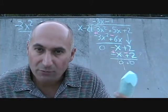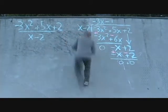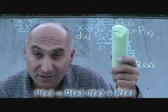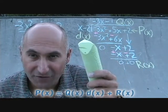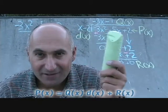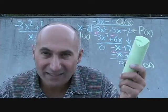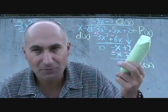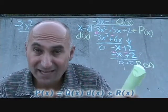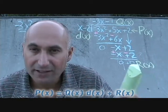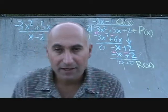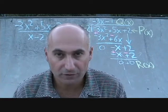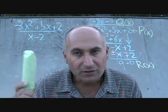Going back to terminology: in our division statement, Q of x is the quotient — that's x minus 2 from up top. D of x is the divisor. P of x is the dividend — we call it P rather than D so we don't have two D's — and R of x is the remainder, which equals zero here. Whenever the remainder equals zero, the divisor is a factor of the top, and that's exactly what we're looking for.